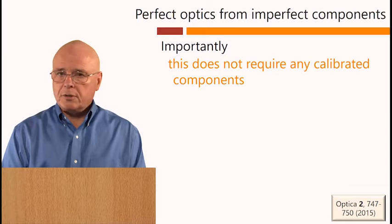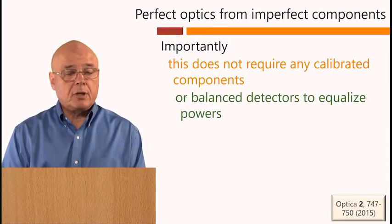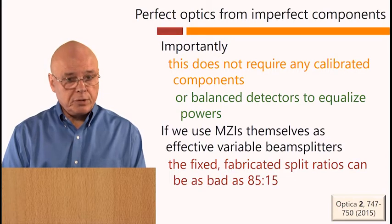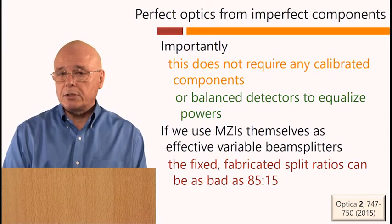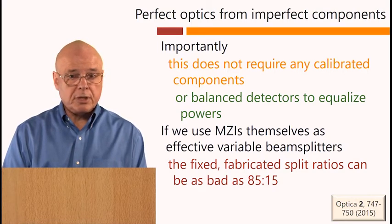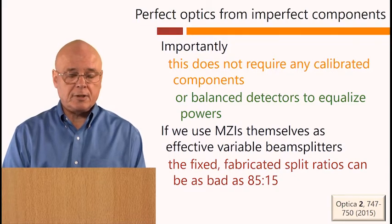Importantly, this does not require any calibrated components or balanced detectors to equalize powers. If we use Mach-Zehnders themselves as effective variable beam splitters, the fixed fabricated split ratios in those beam splitters can be as bad as 85-15. And we can still perfect the overall system.